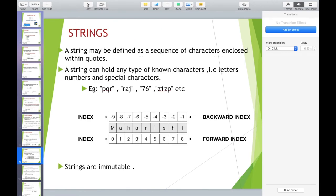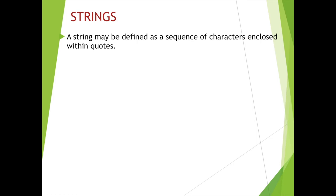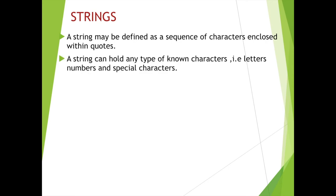Let us go to the next data type which is string. A string may be defined as a sequence of characters enclosed within quotes. A sequence of characters like a name — enclosed within single, double, or triple quotes for multi-line strings — comes under strings. A string can hold any type of known characters: letters, numbers, and special characters. For example, PQR, Raj76, Z1ZP are examples of strings. Also, if 123 is put within quotes it becomes a string, not an integer.